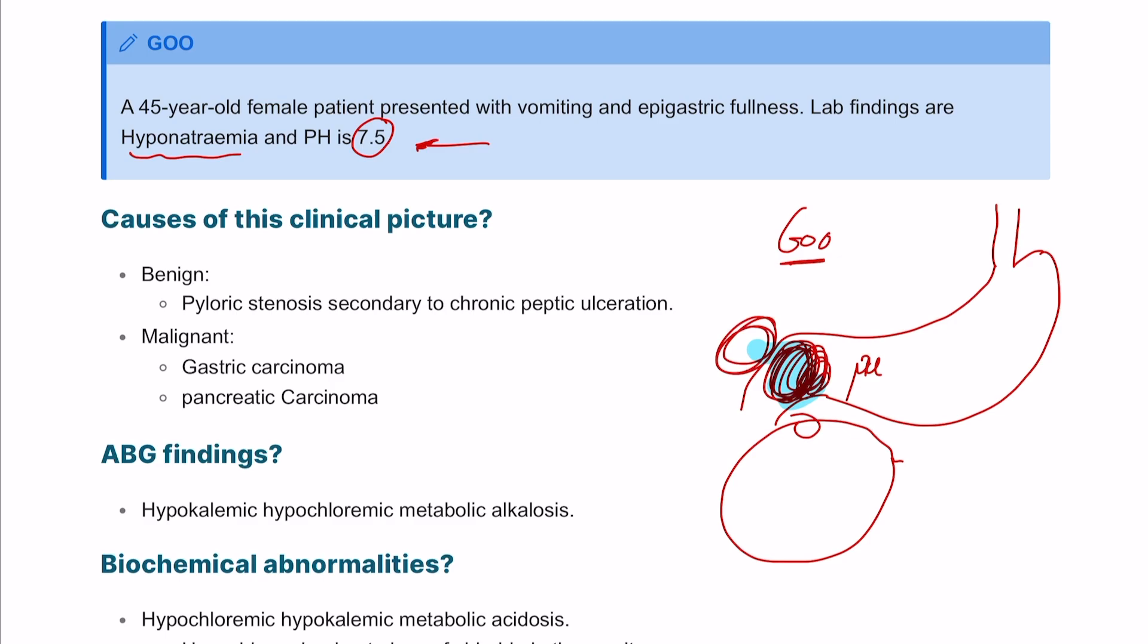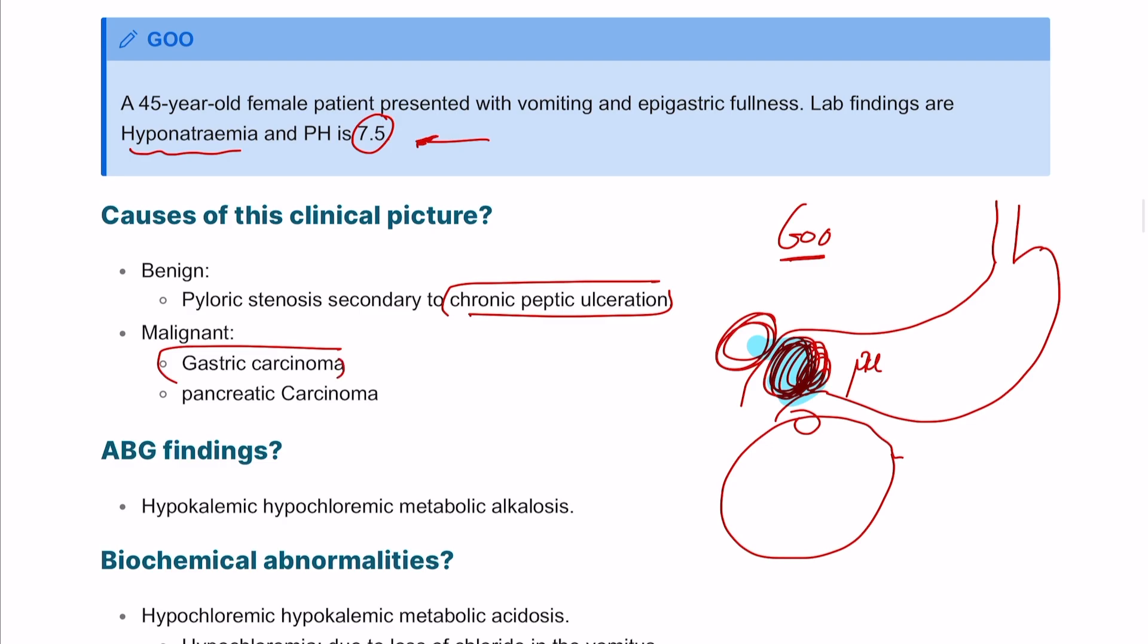What are the causes of this clinical picture? It can be a benign condition like chronic peptic ulcer disease, or a malignant condition which could be gastric carcinoma or pancreatic carcinoma. You can also think of pseudocyst as well.